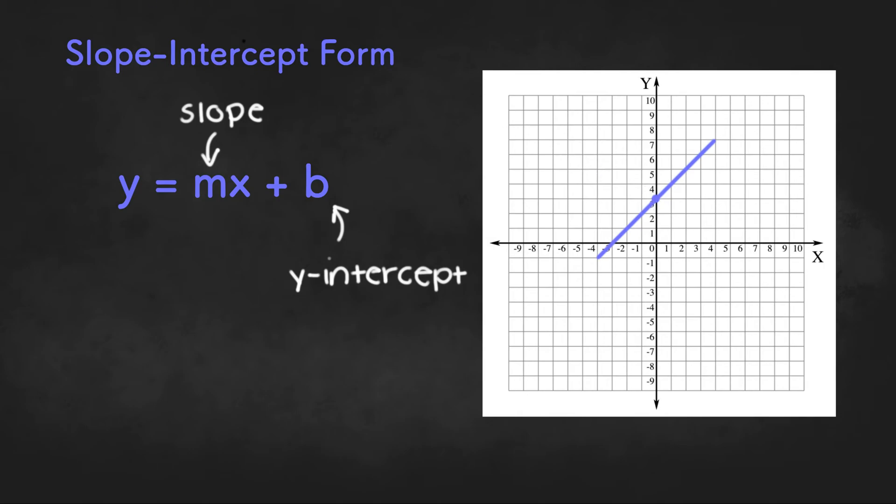So some examples of equations in slope-intercept form would be y equals negative 2x plus 7, or it could look something like y equals x minus 3. And here, the slope is going to be an invisible one.